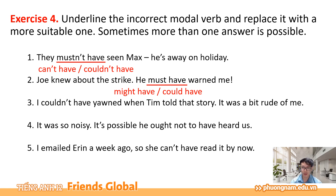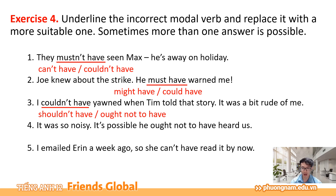Number 3: I couldn't have yawned when Tim told that story. It was a bit rude of me. Động từ khiếm khuyết couldn't have không được dùng đúng ở đây. Với thông tin it was a bit rude of me — nó hơi bất lịch sự — một điều đã xảy ra và chúng ta cho rằng hành động đó không đúng. Cho nên mình sẽ dùng shouldn't have hoặc là ought not to have — tôi đáng lẽ ra không nên ngáp khi Tim kể câu chuyện đó.